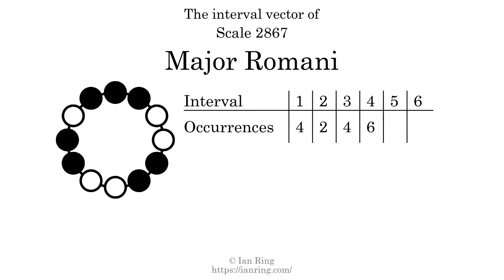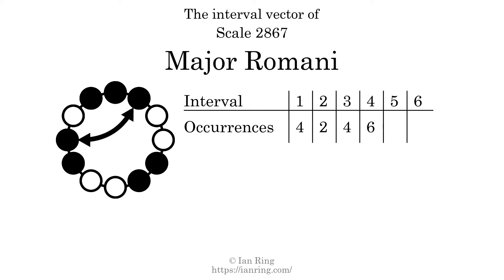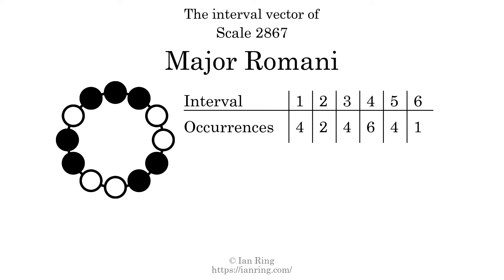There are 4 intervals with the size of 5 semitones — here, here, here, and here. There is 1 interval with the size of 6 semitones, here. Each interval does not appear in this scale a unique number of times, so this is not a deep scale.